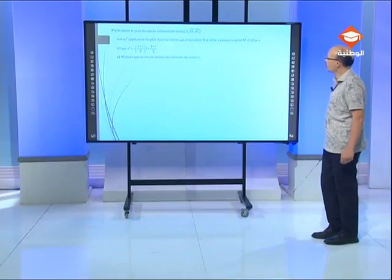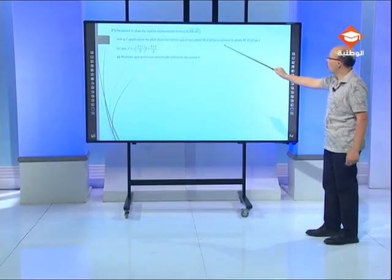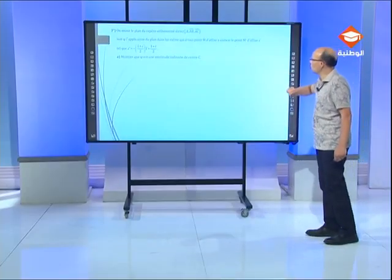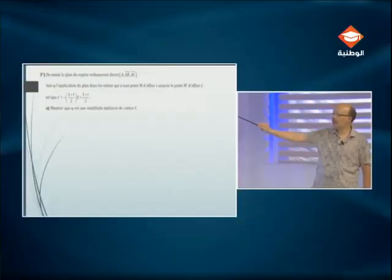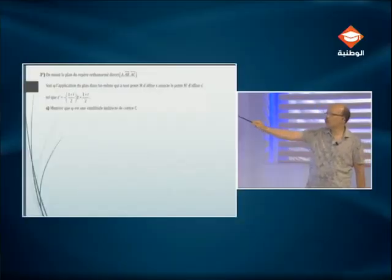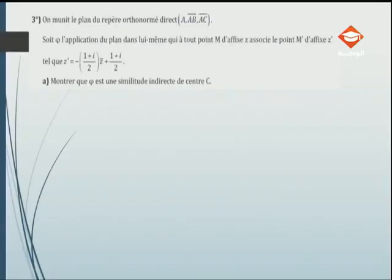Troisièmement, on munit le plan du repère orthonormé direct A, B, AC. Soit Φ l'application du plan dans lui-même qui, à tout point d'affixe Z, associe le point M' d'affixe Z', tel que Z' = ((-1+i)/2)·Z̄ + (1+i)/2. On veut démontrer que Φ est une similitude indirecte de centre C.